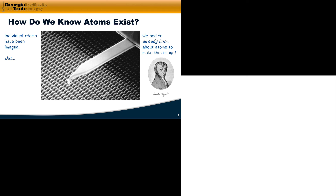How did a man like Amadeo Avogadro, who lived in the 19th century, know that atoms exist? How did he have good scientific evidence that atoms existed? Back in Avogadro's day, he would have had to make macroscopic measurements. So the real question is: how do we know atoms exist based on measurements of macroscopic properties — things like mass, volume, and the like?